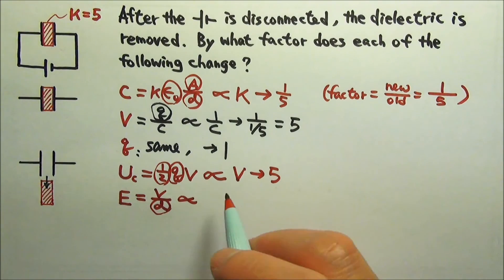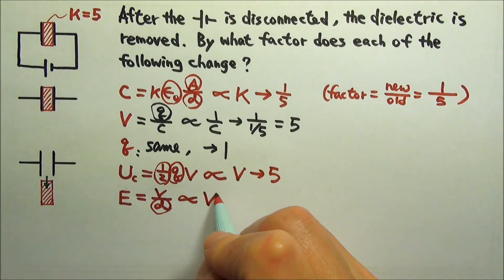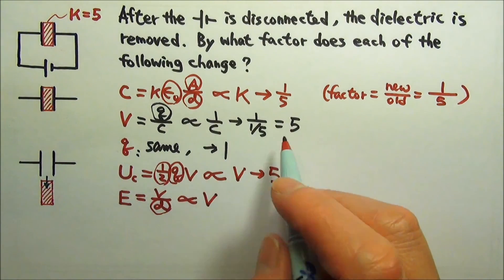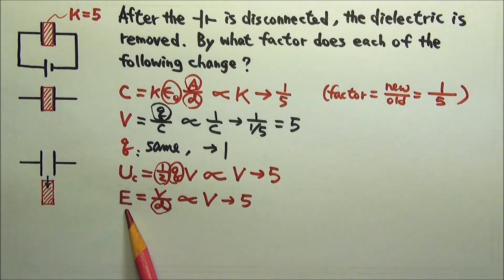So the electric field is proportional to the voltage v. And the voltage changes by a factor of 5, so the electric field changes by a factor of 5 as well.